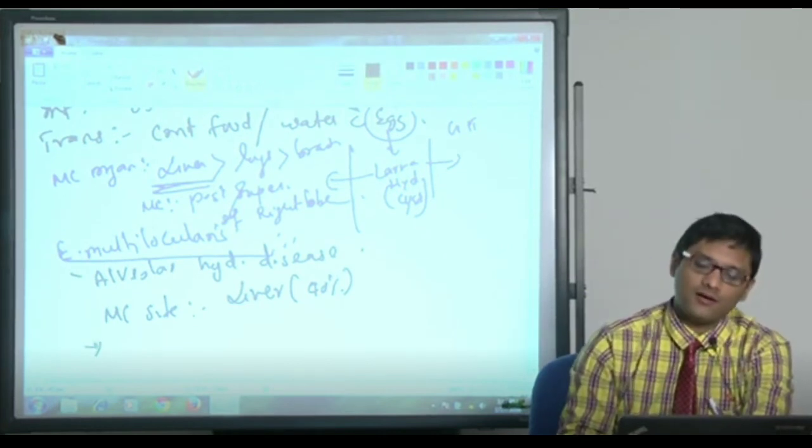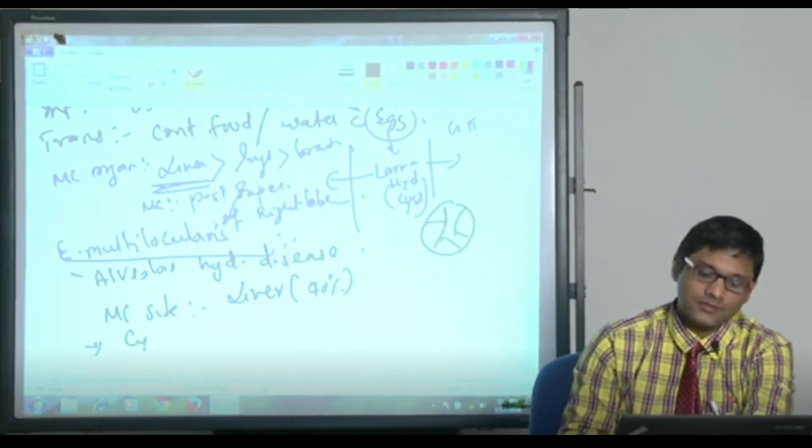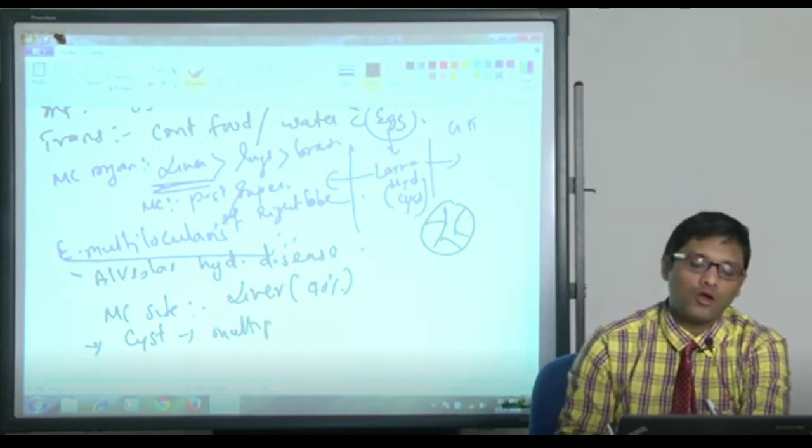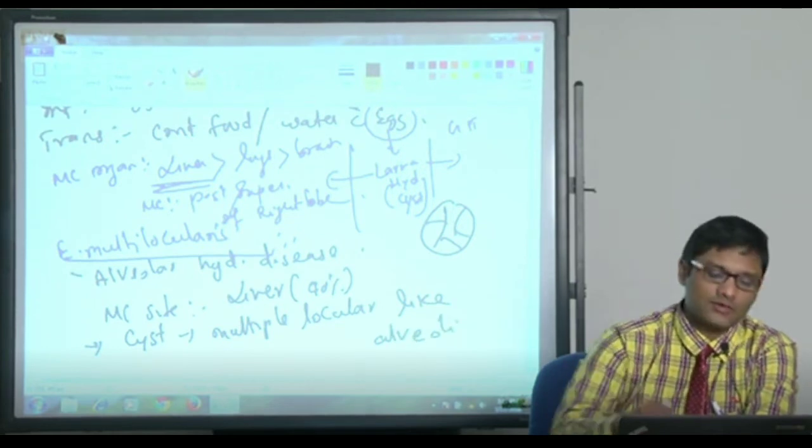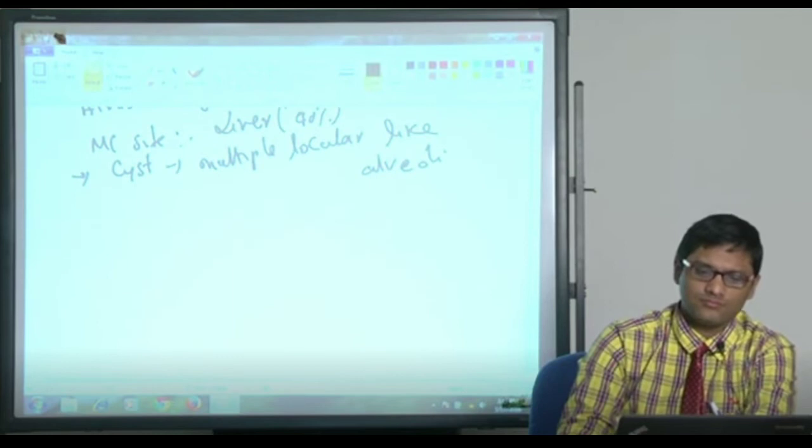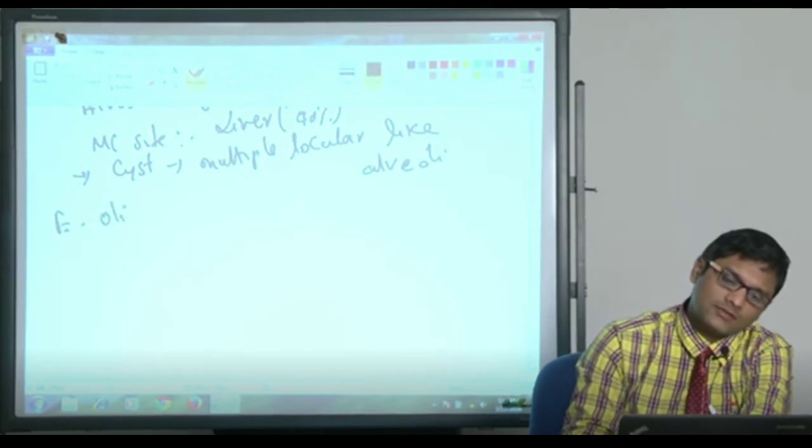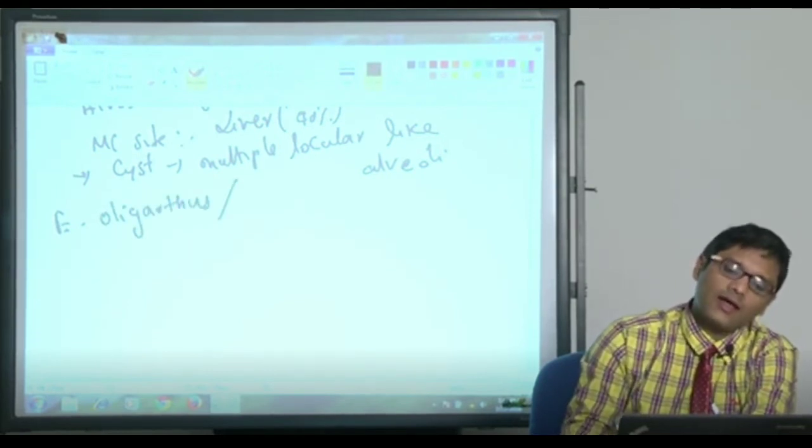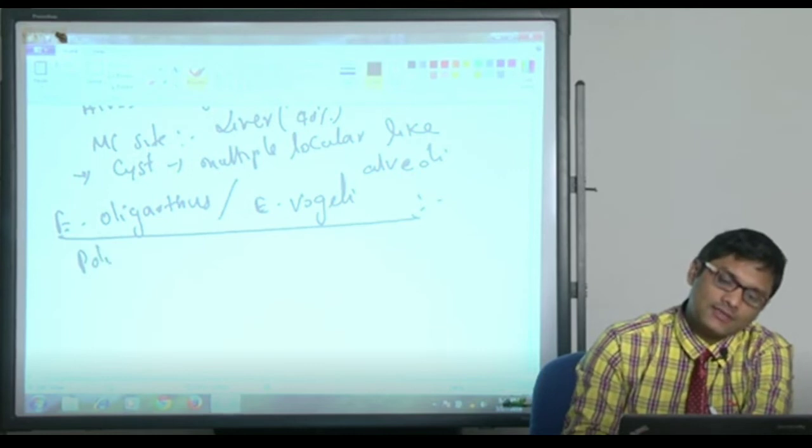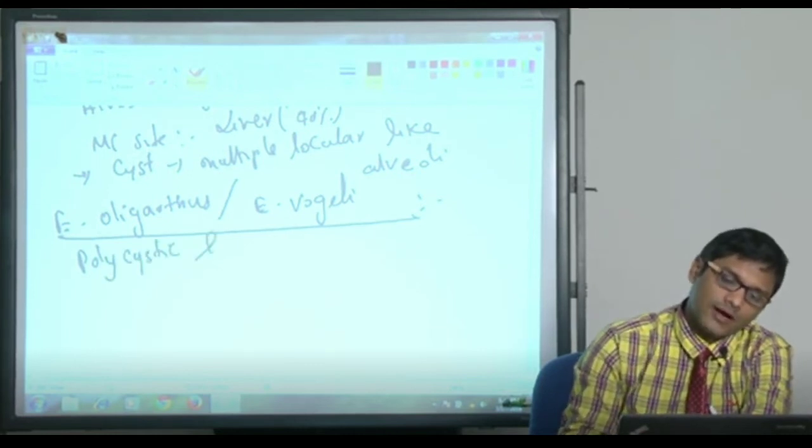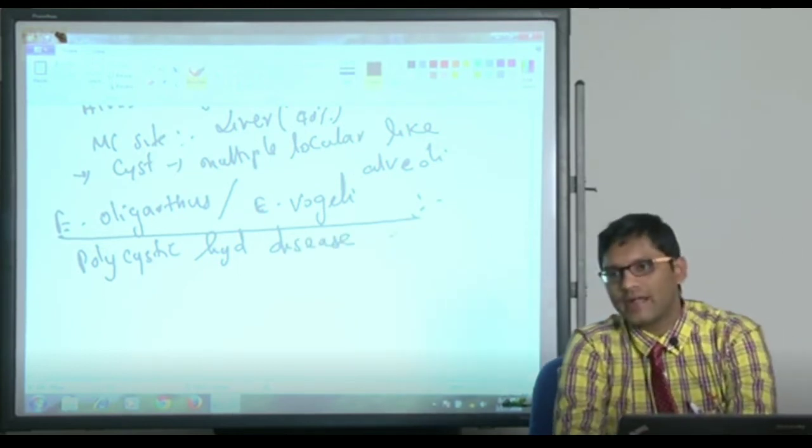Two other species are Echinococcus oligarthus and Echinococcus vogeli. They are the agent of polycystic hydatid disease.